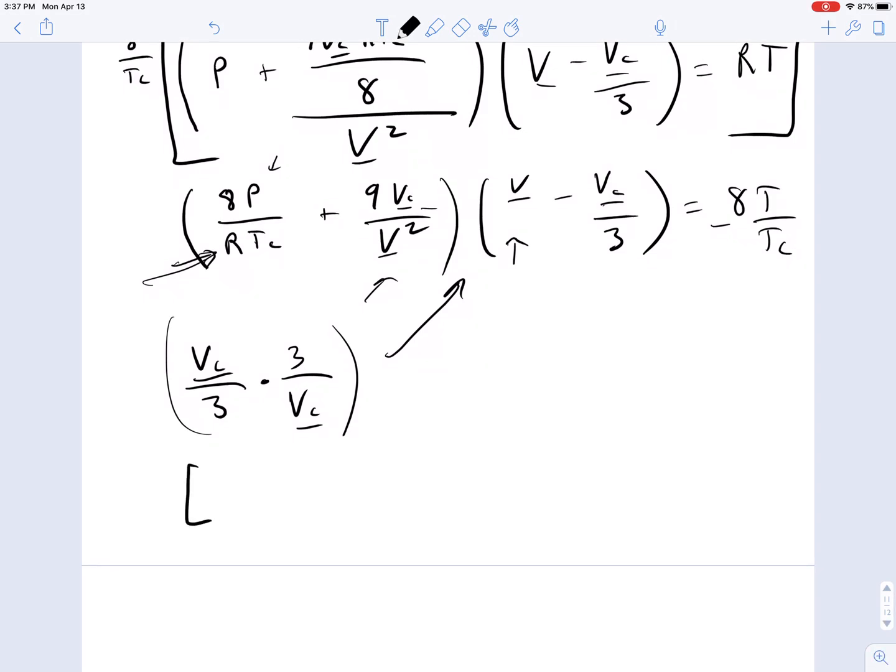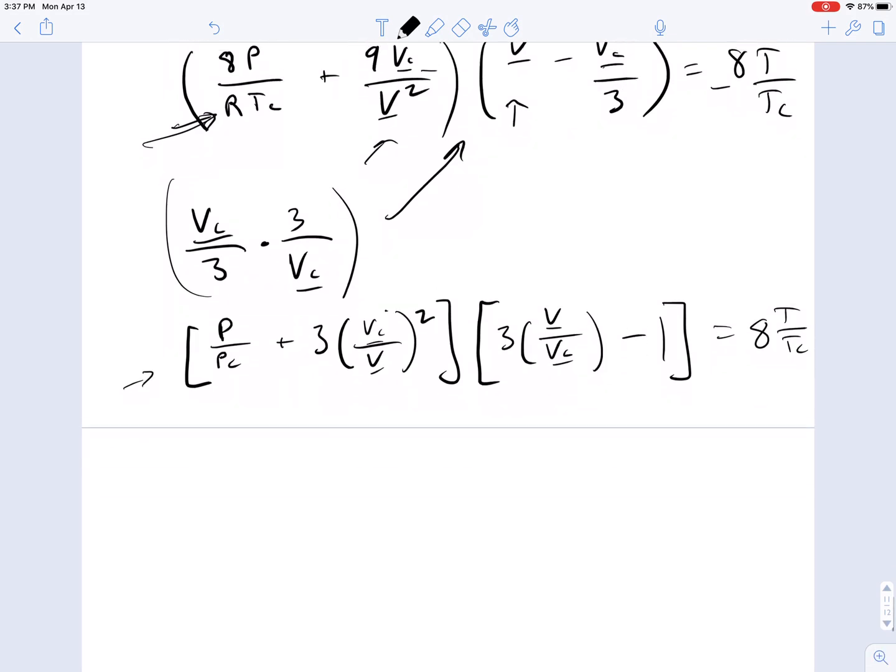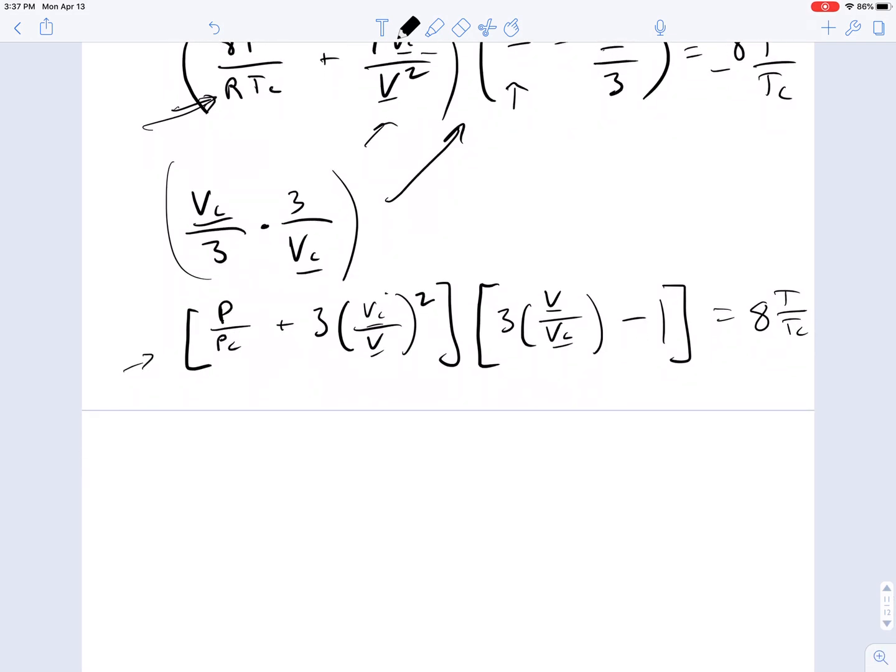What happens is a bit of algebra, but you can show yourself that this becomes P over PC plus 3 times VC underbar over V underbar squared times 3 times V underbar over VC underbar minus 1 equals 8T by TC. I made use of one more thing, and that's that fact that the compressibility factor is equal to 3 8ths, which gets rid of the 8 and the 3 on that term.